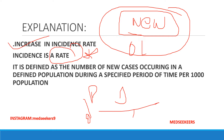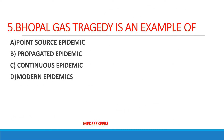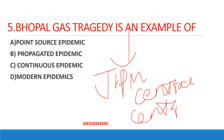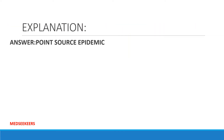Next question: Bhopal gas tragedy is an example of — option A: point source epidemic; option B: propagated epidemic; option C: continuous epidemic; option D: modern epidemic. This is a most favourite question for many examinations — JIPMER 2018, Central University of Kerala, Central University of Hyderabad have all asked this question. The correct answer is: Bhopal gas tragedy is a point source epidemic.